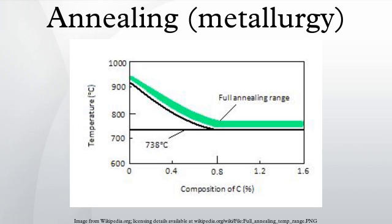Thermodynamically, annealing occurs by the diffusion of atoms within a solid material so that the material progresses towards its equilibrium state. Heat increases the rate of diffusion by providing the energy needed to break bonds. The movement of atoms has the effect of redistributing and eradicating the dislocations in metals and ceramics. This alteration to existing dislocations allows a metal object to deform more easily, increasing its ductility.